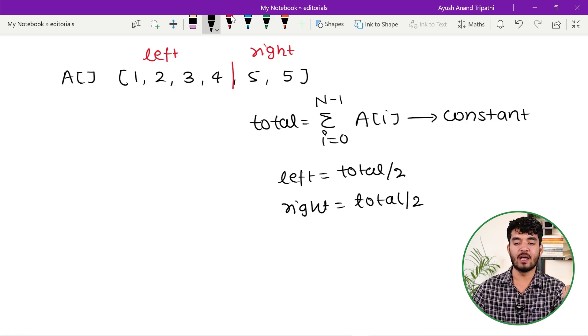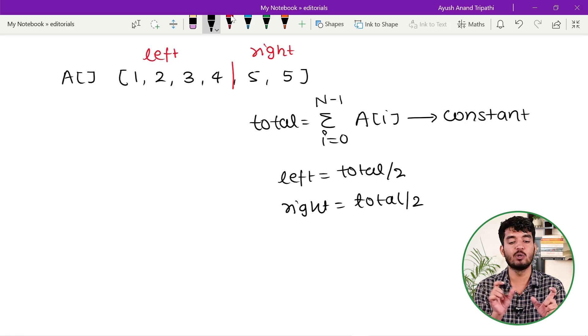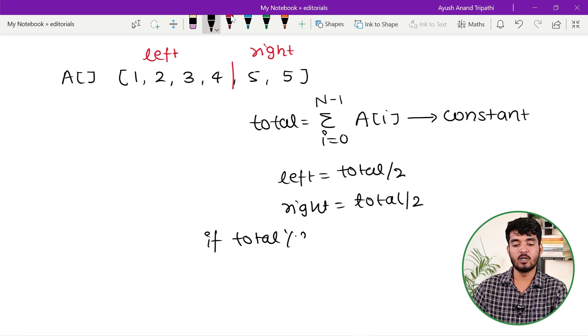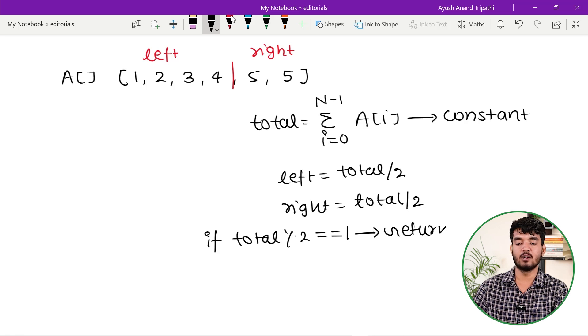There is one edge case: if the value of total is odd, that is, it is not divisible by 2. In that case, it is not possible to split this array into two subarrays with equal sum. So I will write the condition: if total mod 2 == 1 (that is, odd), then simply return false.